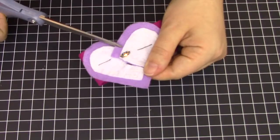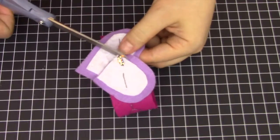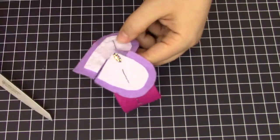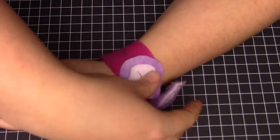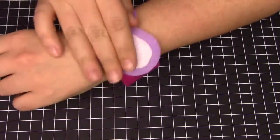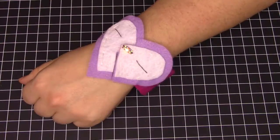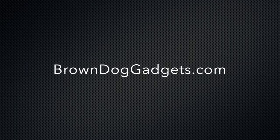We also want to remove this extra piece of purple felt. Take your scissors, and trim it. And now your heart looks complete. Congratulations! You have just made an LED felt heart bracelet with conductive thread. For this and more projects like it, check out BrownDogGadgets.com. Thank you!